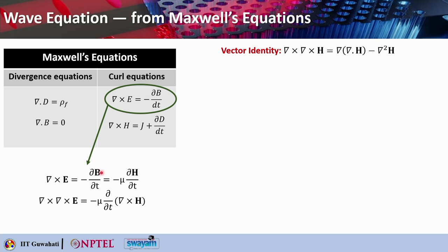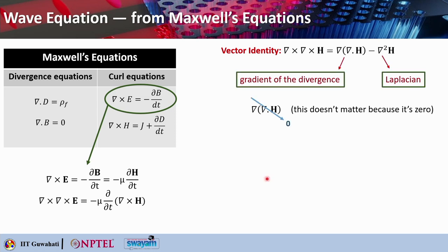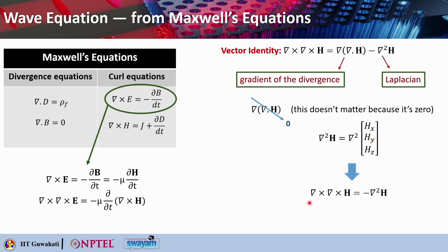Starting with curl of E equals minus ∂B/∂t, and writing B as μH, we get curl of E equals minus μ ∂H/∂t. Taking the curl of both sides gives curl of curl of E equals minus μ ∂(curl H)/∂t. Considering a source-free region with no charge or current, the gradient term is zero, so curl of curl of H simplifies to minus the Laplacian of H. H can be written in terms of components Hx, Hy, Hz, giving curl of curl of H equals minus ∇²H.